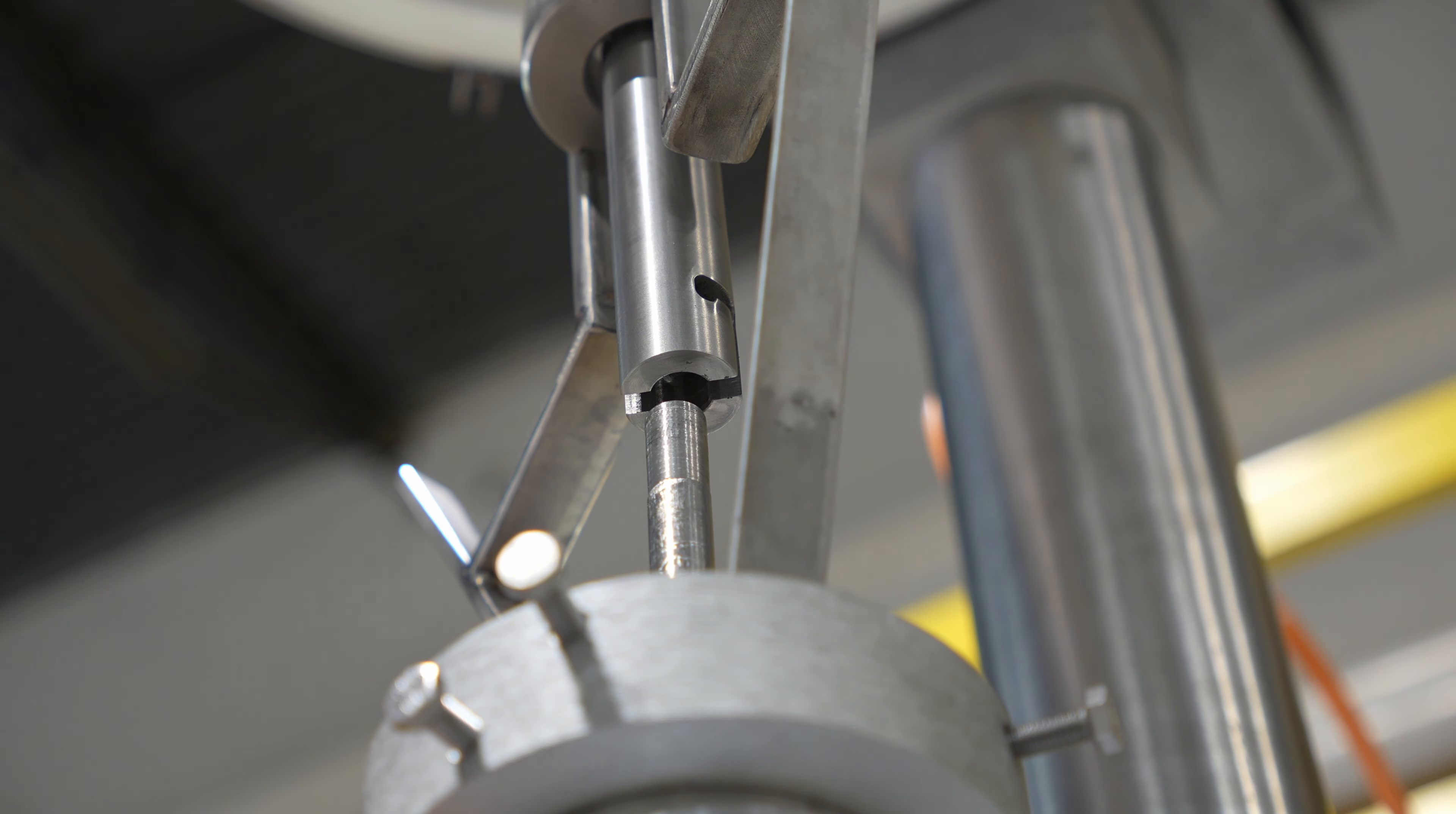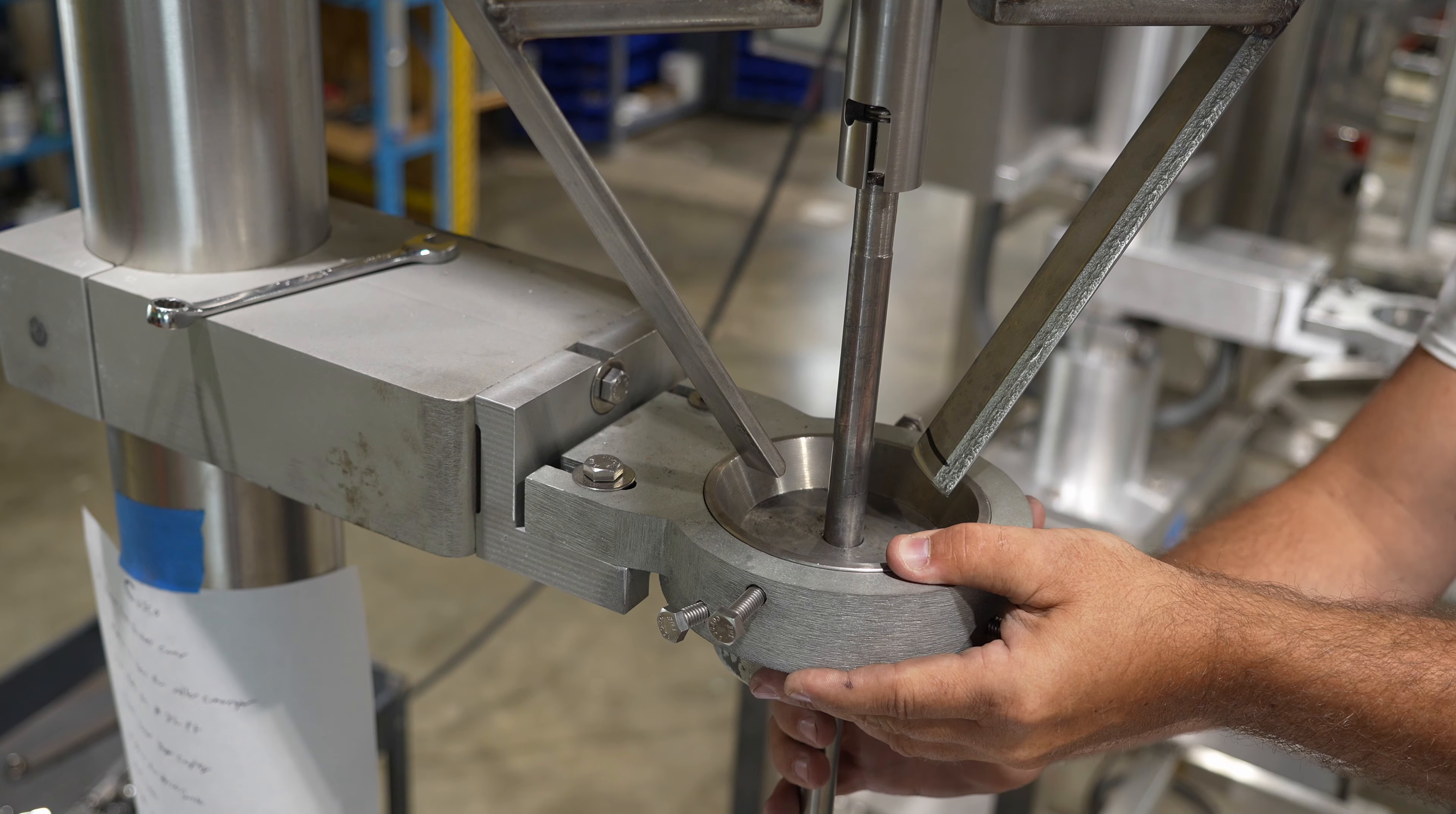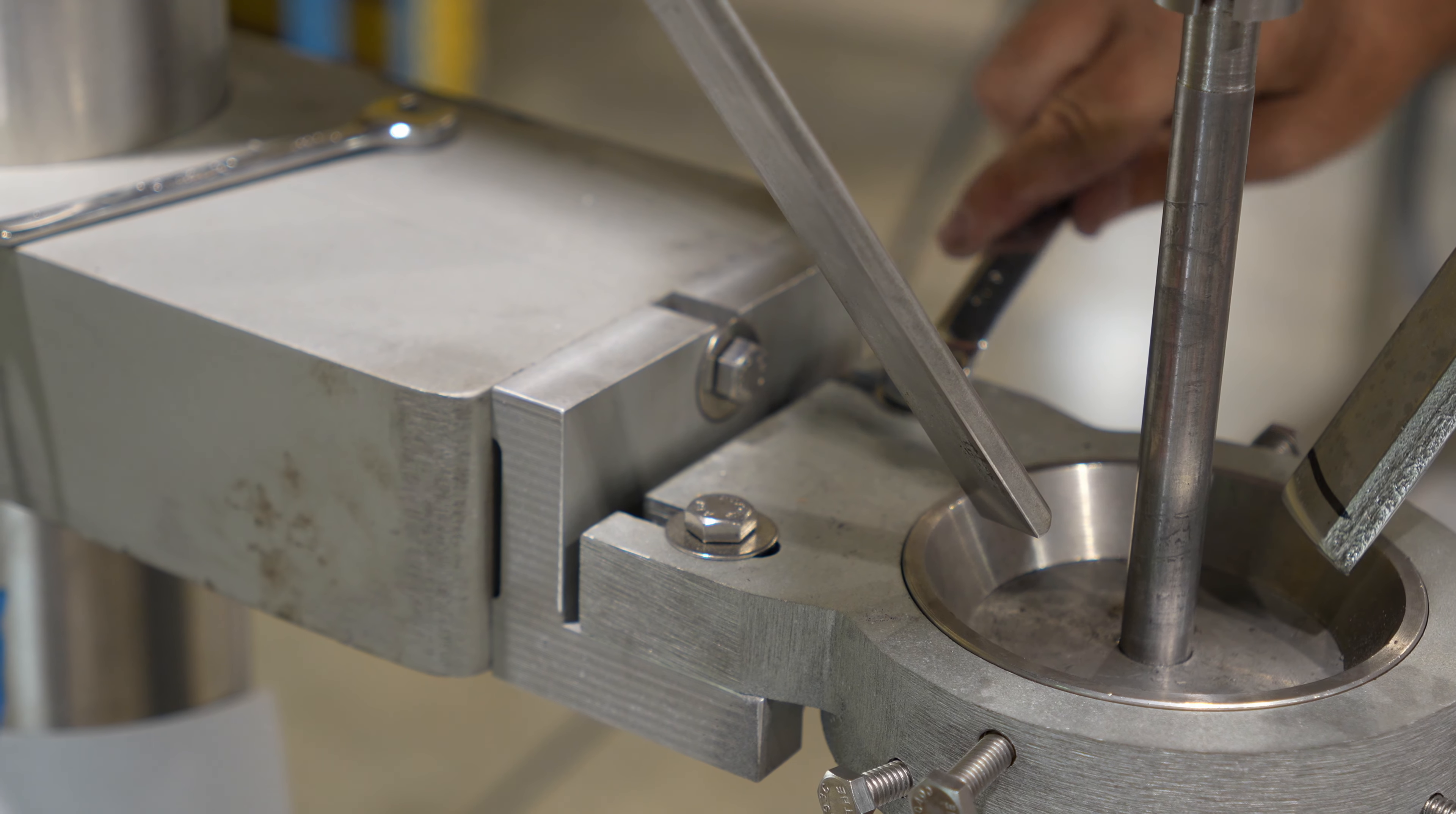To do this we're going to loosen the vertical bolts on the back side of the hopper and funnel coupling. From there we're going to adjust the coupling side to side. After we do that, just ensure that the rod fits smoothly into the auger shaft. After the rod fits smoothly, we're going to tighten the vertical bolts.